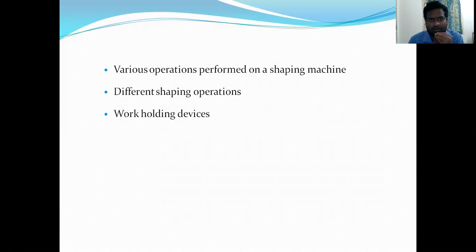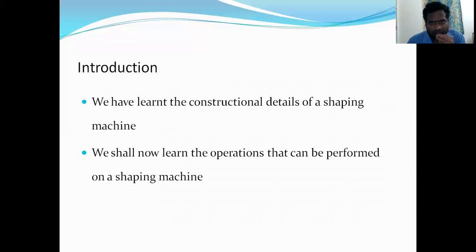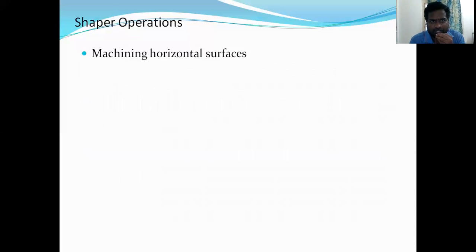Now we are moving to another topic: various operations performed on a shaping machine, different shaping operations, and work holding. The shaping machine generally produces flat surfaces. The shaper machining operations include: machining horizontal surfaces, machining vertical surfaces, machining angular surfaces, cutting slots, grooves and keyways, machining irregular surfaces, machining splines, and cutting gears.